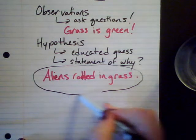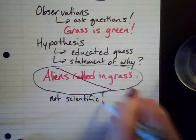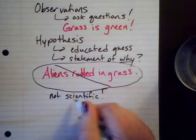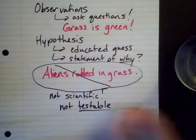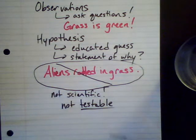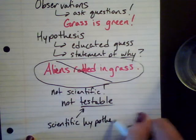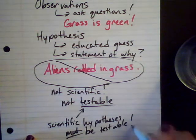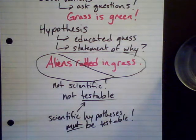The reason that's no good is that scientific hypotheses have to be testable. I cannot test whether or not aliens rolled in the grass — that is not within our current capabilities of testing. So it is not a scientific hypothesis. The key to a good scientific hypothesis is that it must be testable.